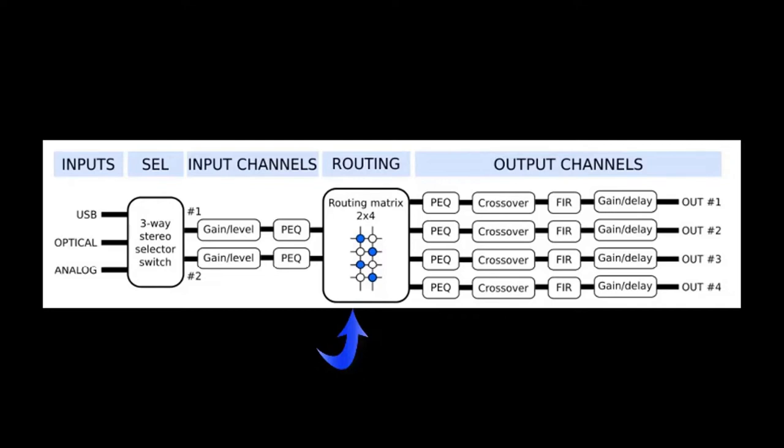Examples range from active two-way crossover systems to multi-subwoofer home theater systems. The four outputs of the routing matrix enter another set of four parametric equalizers which we'll discuss in more detail in a minute.